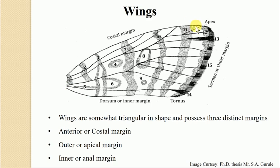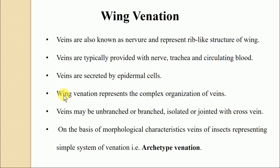The third margin is referred to as the inner margin, also referred to as the anal margin, and in some cases also referred to as dorsal. So in this way, the wings of a generalized insect have a rough triangular shape with three margins: costal margin, outer margin, and inner margin. These whole wing membranes are traversed by different kinds of veins giving a particular venation pattern, specific to the insect and the groups they represent.